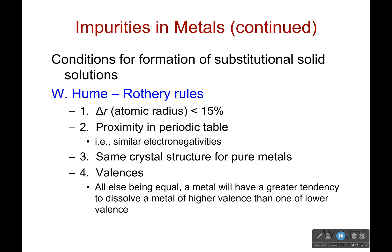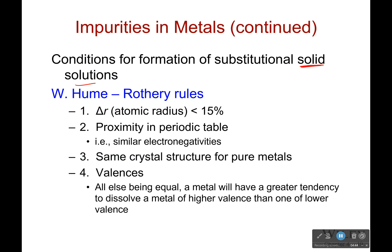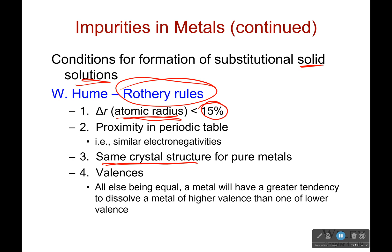Coming back to solid solutions — for a substitutional solid solution to form, all four Hume-Rothery rules must be satisfied. First, the atoms must have atomic radii that are fairly close; if there's too much of a difference — more than 15% — it won't work. Second, they must have the same crystal structure, at least for pure metals. Copper and nickel, for example, have the same crystal structure and are fairly close in atomic radius.